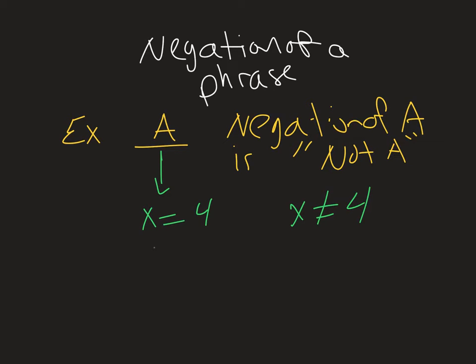If, for example, we have X is greater than 2, well, not A could be X is less than or equal to 2. It accounts for the other case.